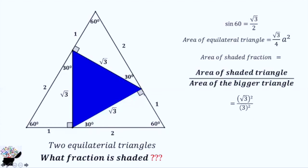The side of the smaller equilateral triangle is √3, so √3 squared. The side of the bigger equilateral triangle is 2, so 2 squared.